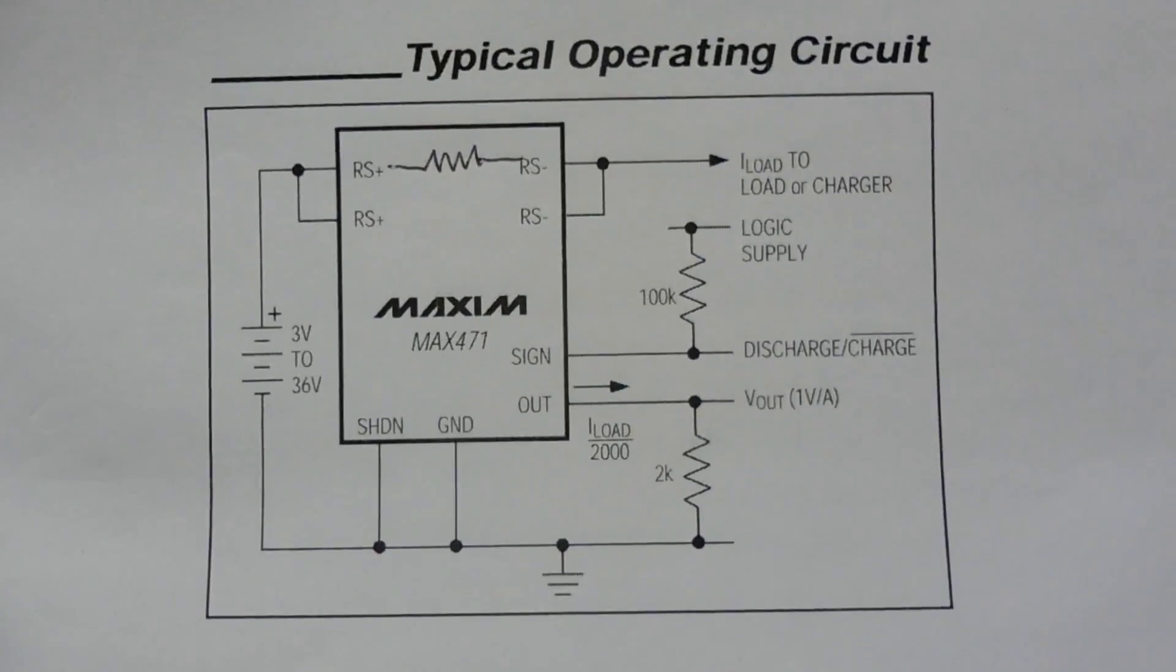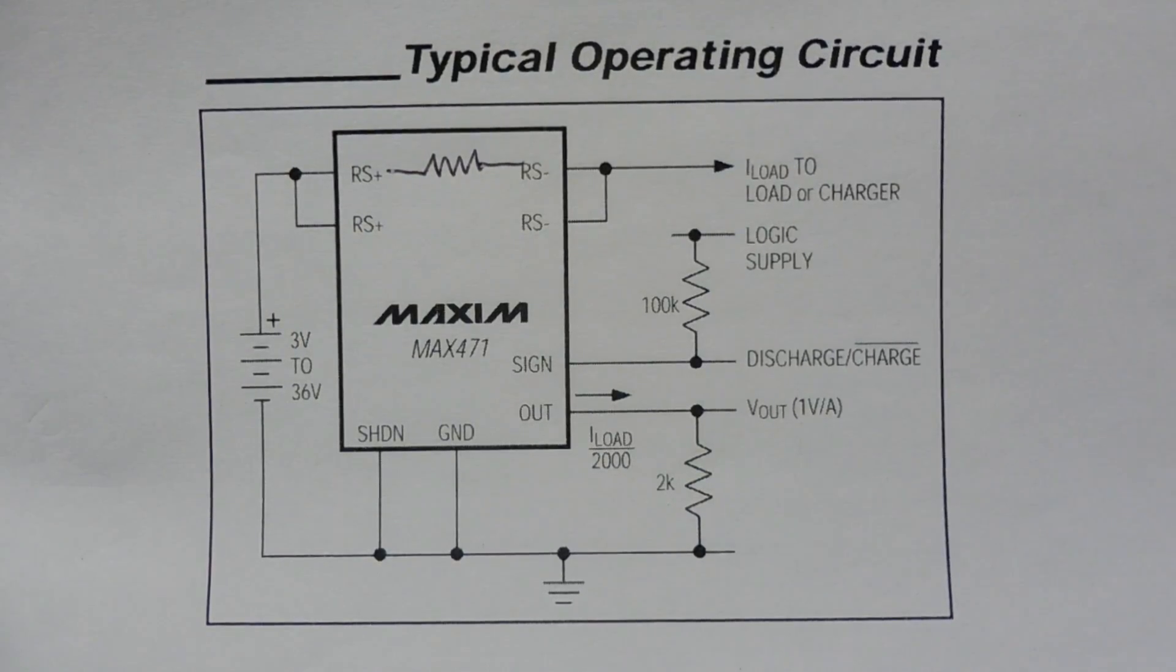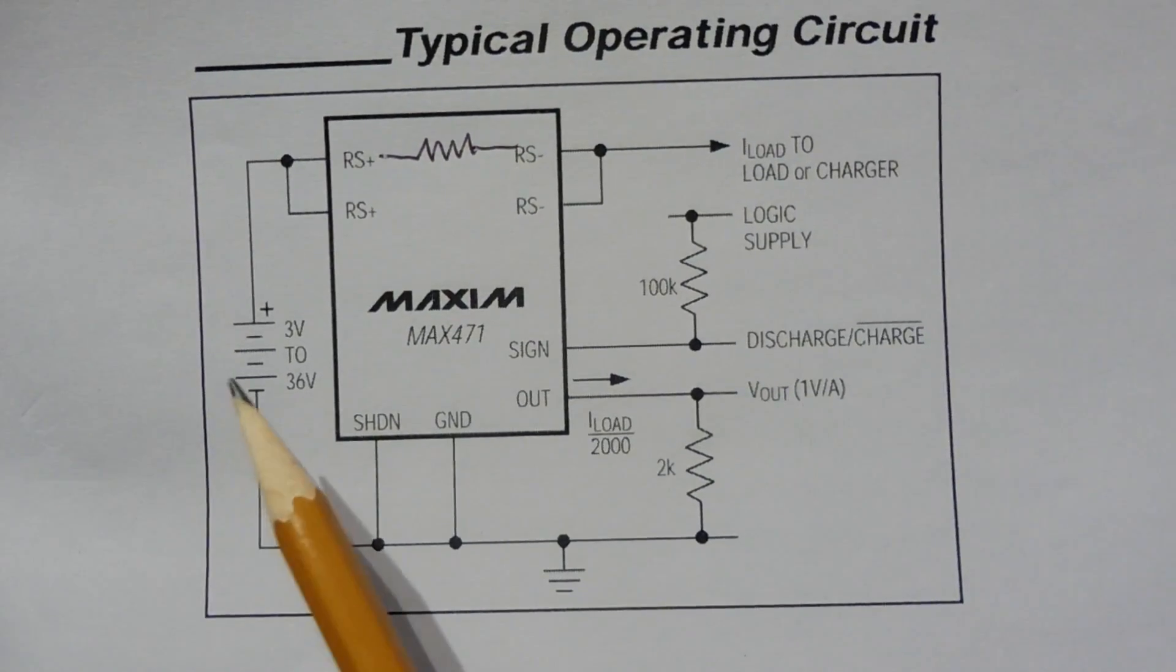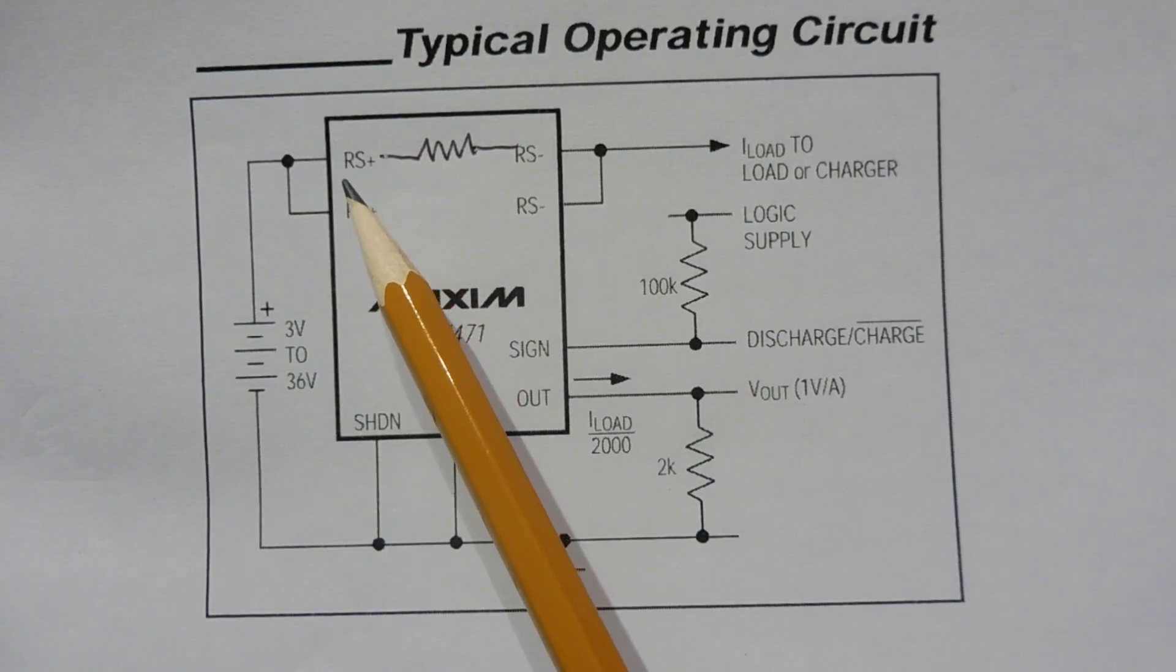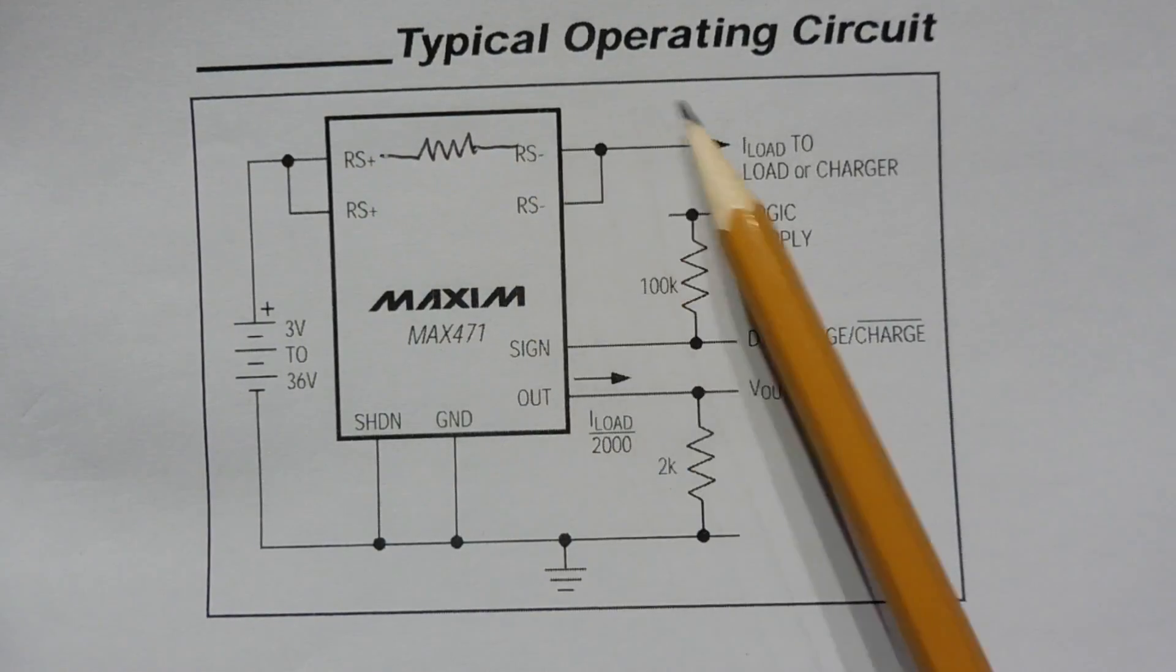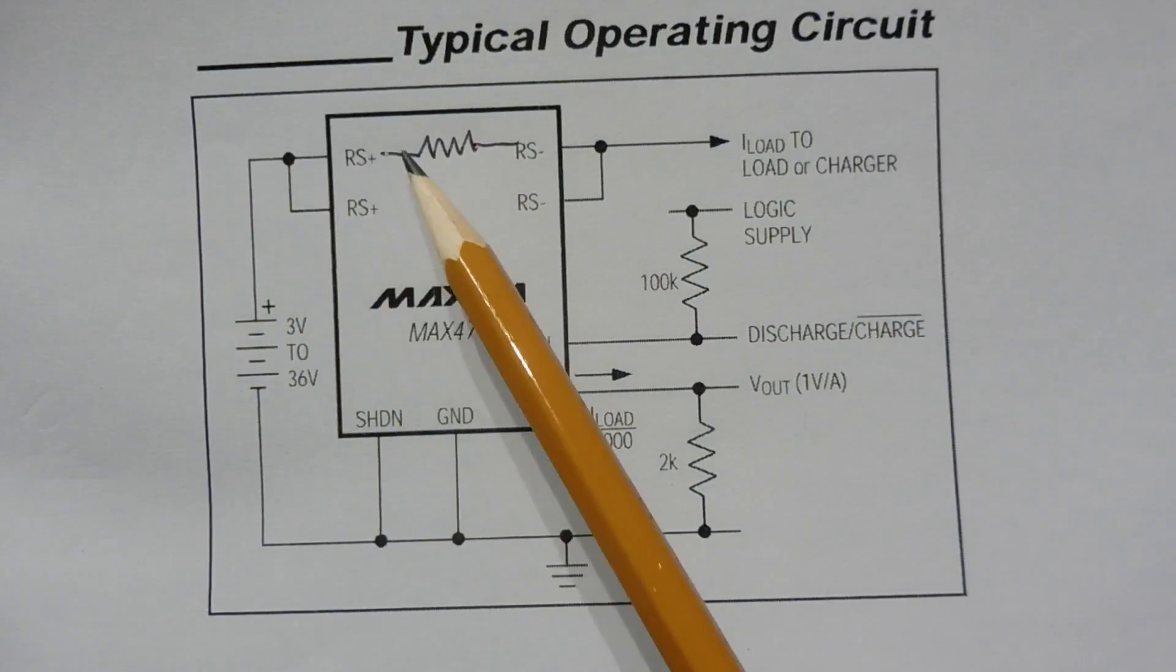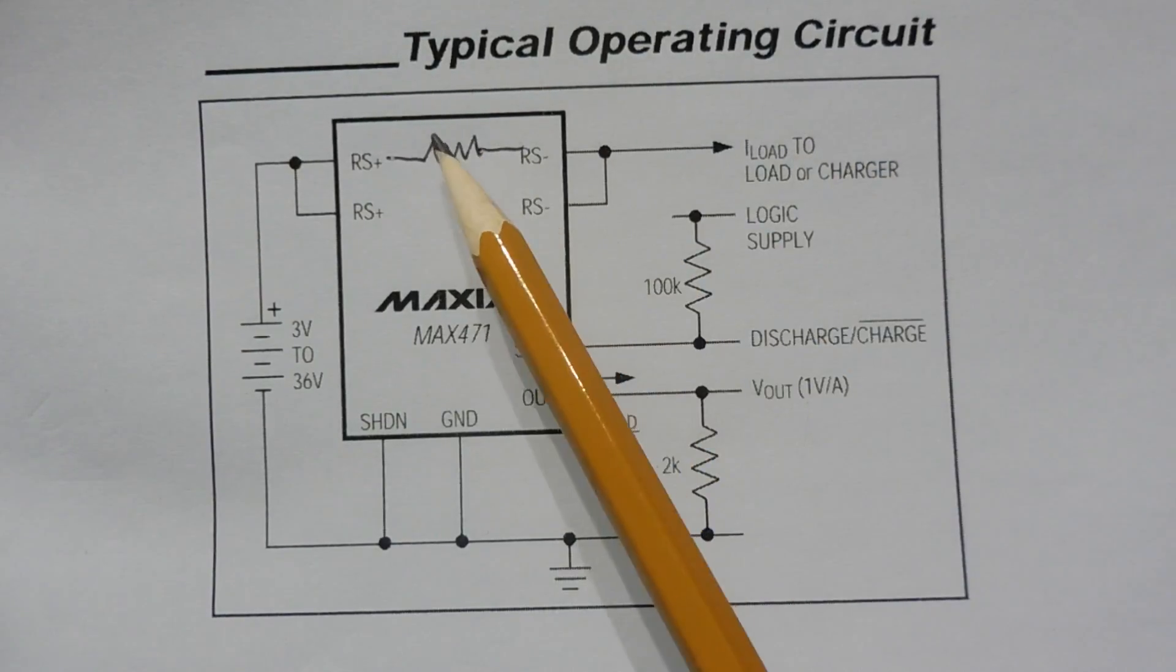Here's the wiring diagram of our MAX471 current detection and measurement. If we look at the left, we can see our power supply ranges from 3 volts to 36 volts. The negative is connected to the ground, and the positive is connected to the RS plus, which is our sensing resistor plus. I've drawn in the resistor between the two terminals, and the output goes to our load to ground. So the current from our power supply, through the resistor, through the load to ground - the same current flowing through the load will be flowing through the resistor.